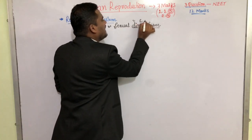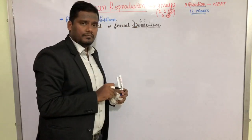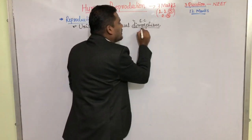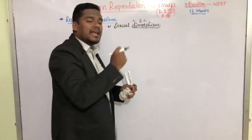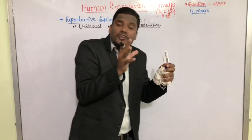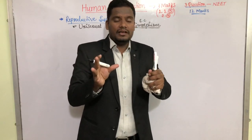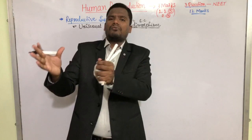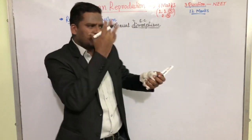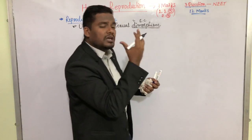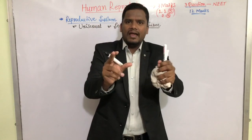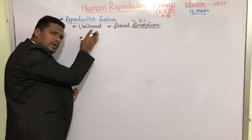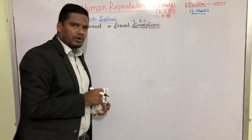Sexual dimorphism means the difference in appearance on the basis of their sexual characters. We can clearly identify or differentiate between a boy and a girl in case of human beings — they show two different morphologies. The male morphology is completely different from the female morphology. Just by observing a person we can clearly identify yes it is a boy, yes it is a girl — that is called sexual dimorphism.